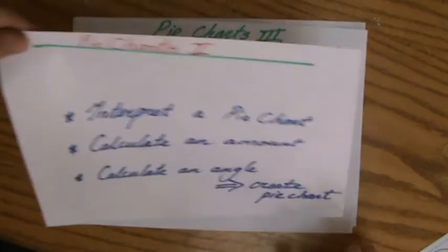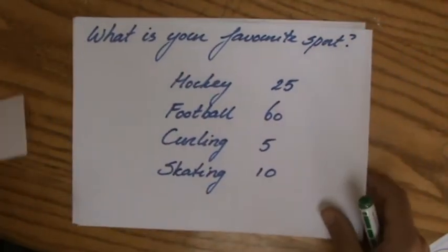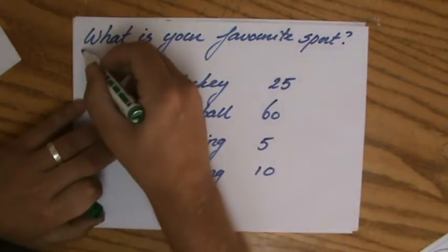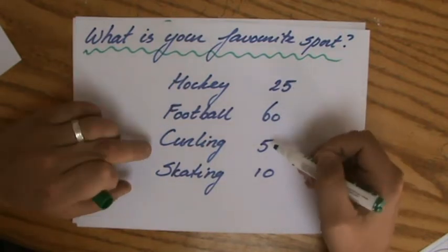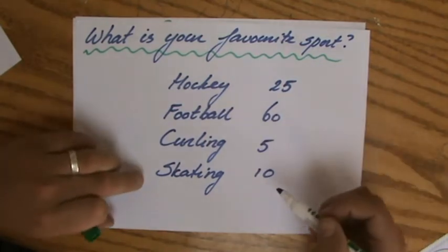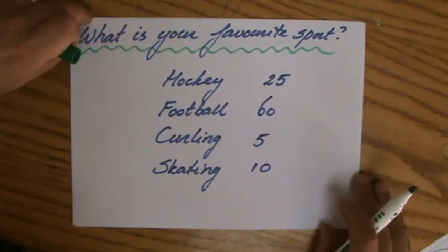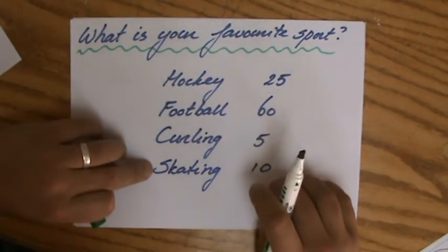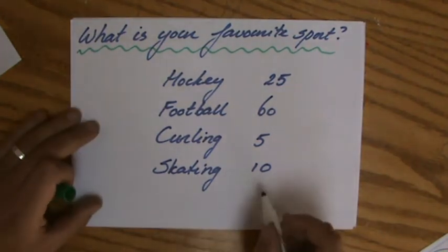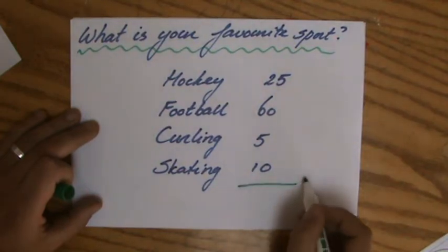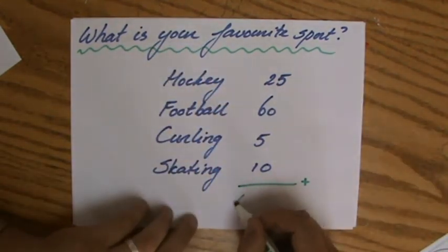I made up this example: I asked people what is your favorite sport. Twenty-five people say hockey, 60 people say football, 5 say curling, and 10 people like skating. How many people in total did I ask for their favorite sport? The total frequency would be the addition of those frequencies, so I've asked 100 people in total.